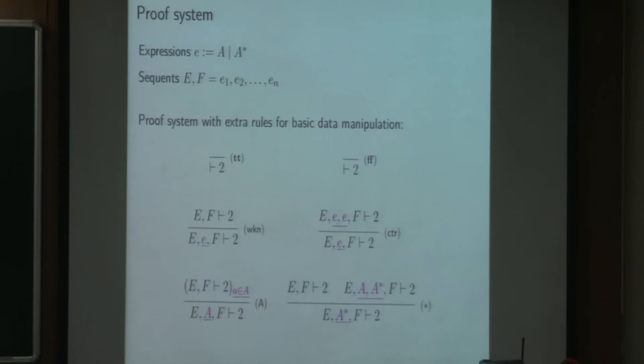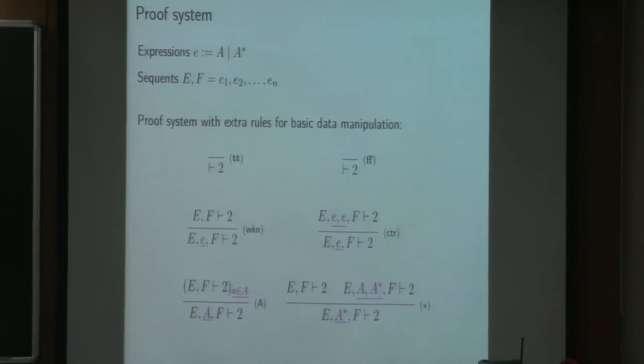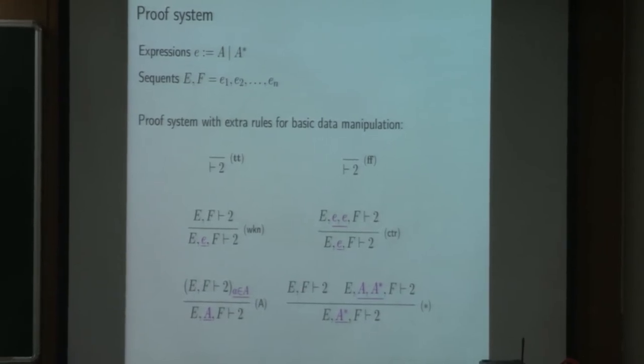The proof system is rather restrained due to this constraint. The only expressions we have are either a letter or a word A star. And the sequences are lists of such expressions. And we have two axioms: one which corresponds to true, one to false for the right part. We have two structural rules, one which is the weakening and one which is the contraction.